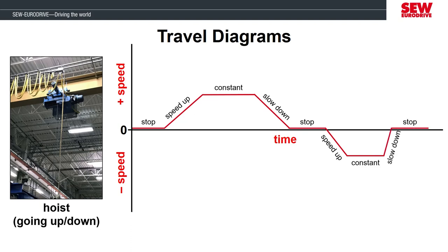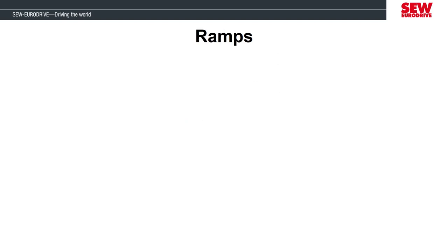The speed up and slow down areas of this graph are where the motor has acceleration, but how can we determine how long that time is in seconds? The motor drive doesn't have a parameter to enter the acceleration value directly, so we have to convert the desired time to accelerate into a ramp time parameter. Before we get into calculating these times, let's give some definitions.